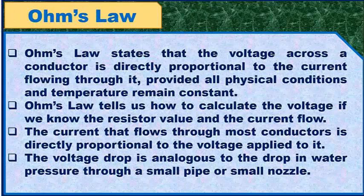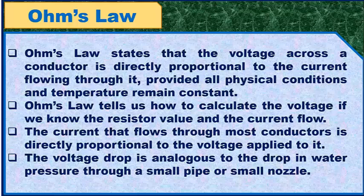Ohm's Law states that the voltage across a conductor is directly proportional to the current flowing through it, provided all physical conditions and temperature remain constant. Ohm's Law tells us how to calculate the voltage if we know the resistor value and the current flow. The current that flows through most conductors is directly proportional to the voltage applied to it.